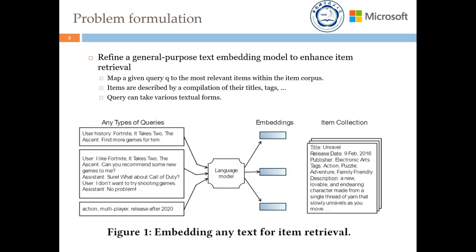The aim of our work is to refine a general-purpose text embedding model to enhance item retrieval. Specifically, this embedding model can effectively map a given query to the most relevant items within the item corpus. The items are thoroughly described by a compilation of their titles, tags, attributes, and descriptions. The query can take various textual forms ranging from implicit user behaviors to instructions that convey explicit intents.